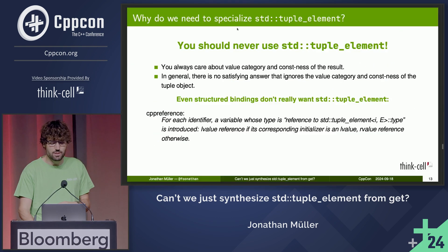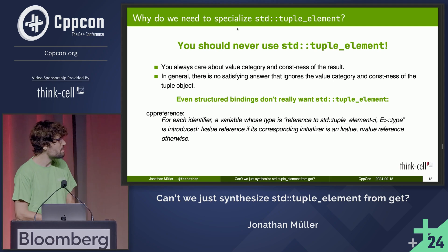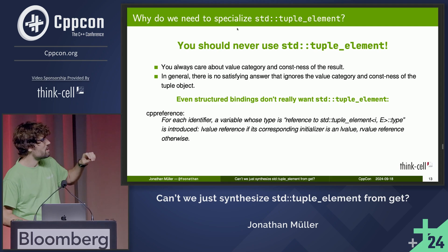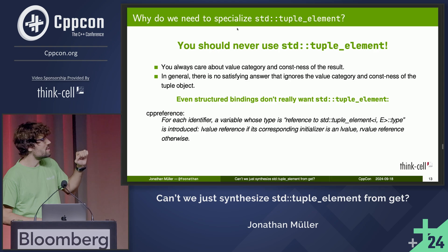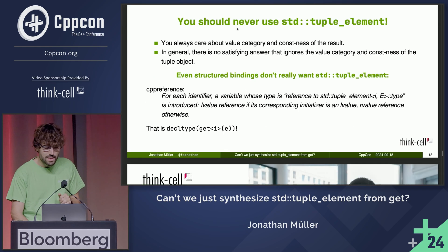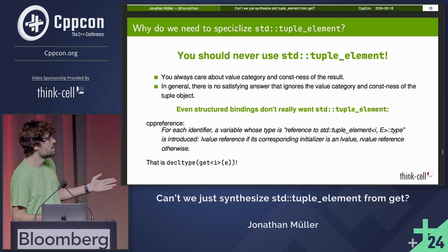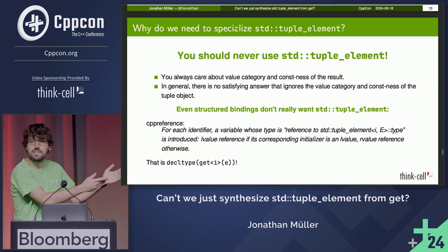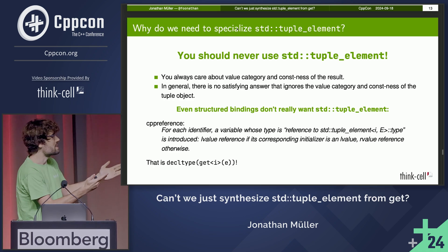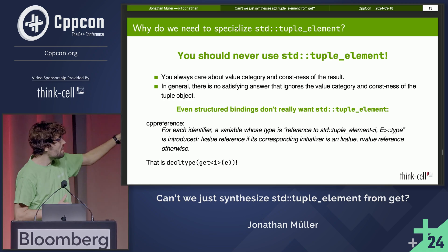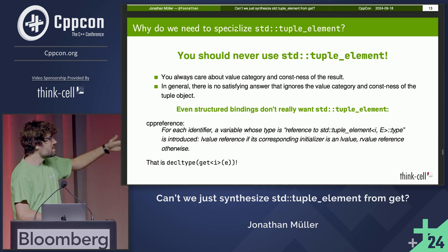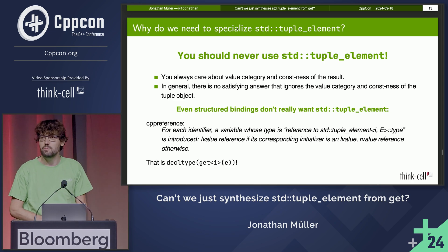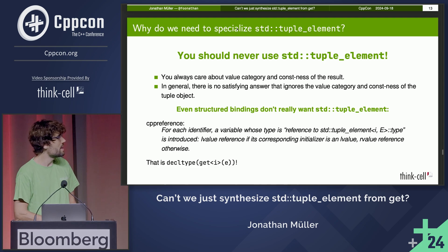Structured bindings require tuple_element, but CPP reference says we create a reference to tuple_element, and that is an L-value reference if the tuple is an L-value and an R-value otherwise. And this is the behavior of decltype. So why doesn't it just use decltype(get)? Why does it go by tuple_element? I go through all this trouble to synthesize tuple_element based on get, and then it just undoes that to give me get anyway. What's going on here? This is really annoying.